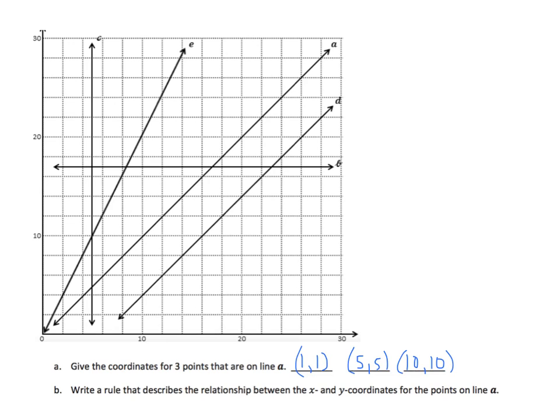So I could name any points right where my x and y have the same coordinates. So I can start with 1 and 1, 5 and 5, 10 and 10. What is the relationship that describes the relationship between the x and y coordinates for the points on line A? Well, that's simple. Y is the same as x. So y equals x.